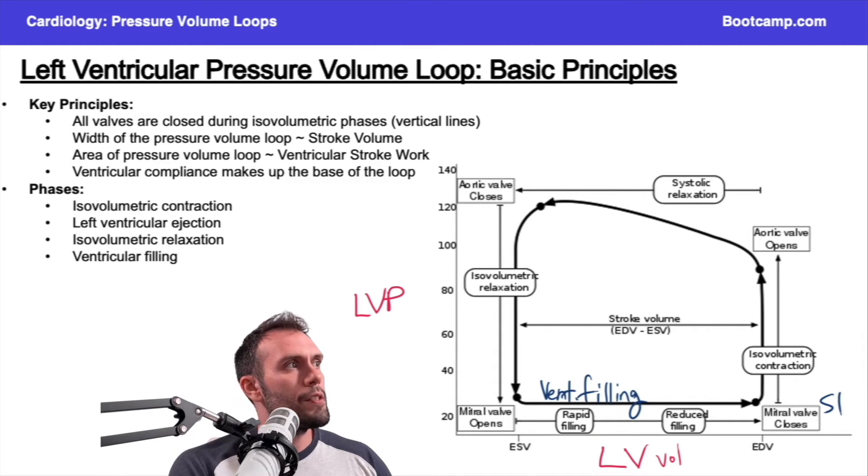After this phase, the mitral valve is going to close. It's going to make the S1 heart sound and we're going to get isovolumetric contraction. The ventricle is going to be contracting here, and eventually when the left ventricular pressure exceeds the aortic pressure, the aortic valve is going to open. It's important to note this is isovolumetric.